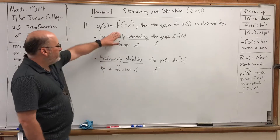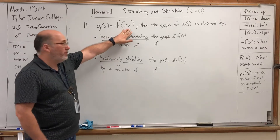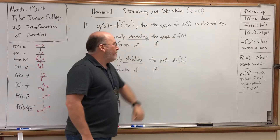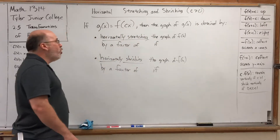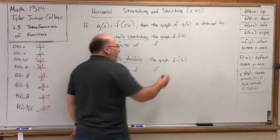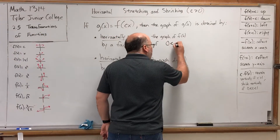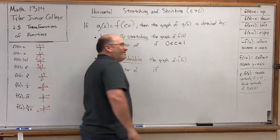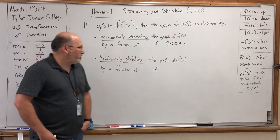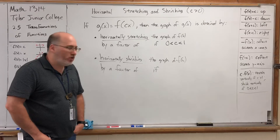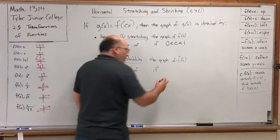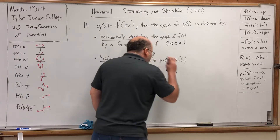If G of X equals F of C times X — in other words, if you multiply the number directly on the X — then the graph of G is obtained by horizontally stretching the graph by a certain factor if C is less than one. And it invokes a horizontal shrinking if the multiplier is greater than one.